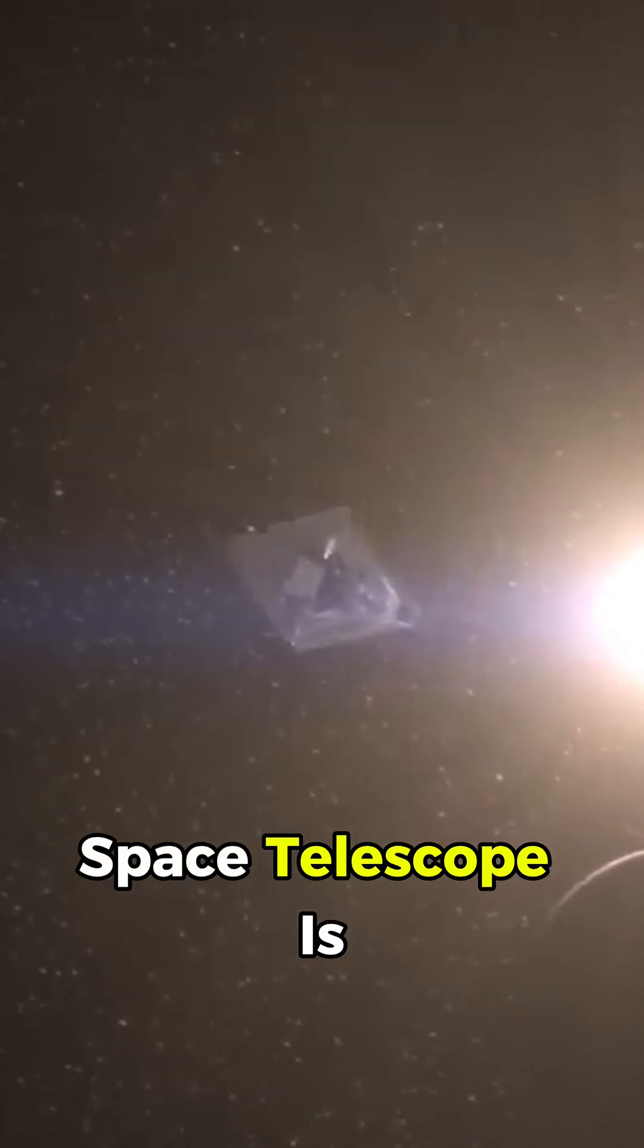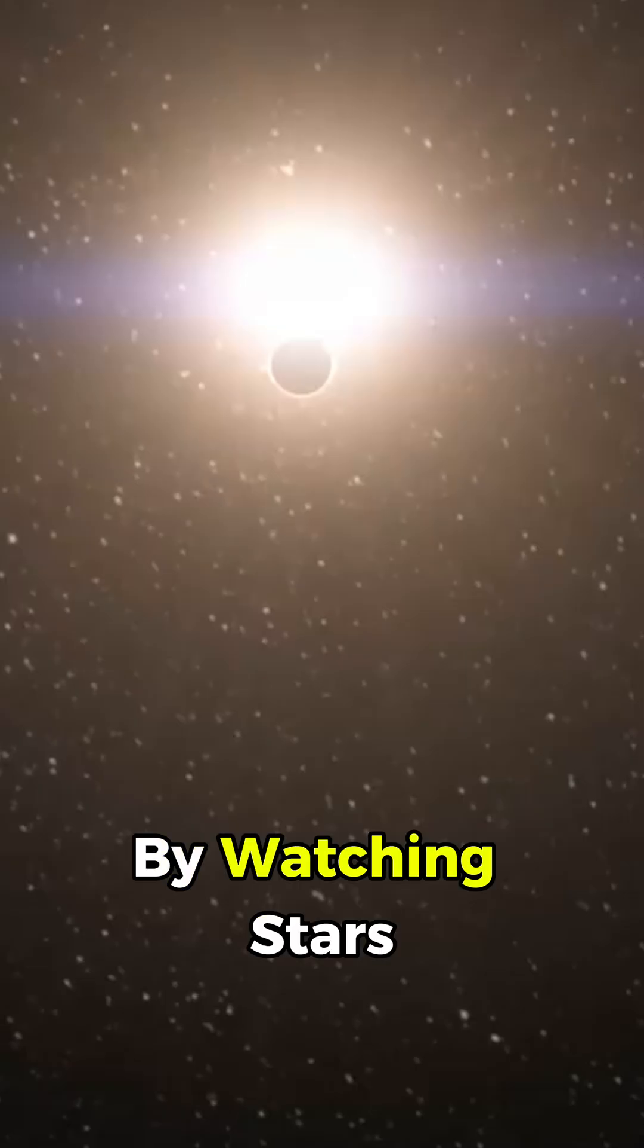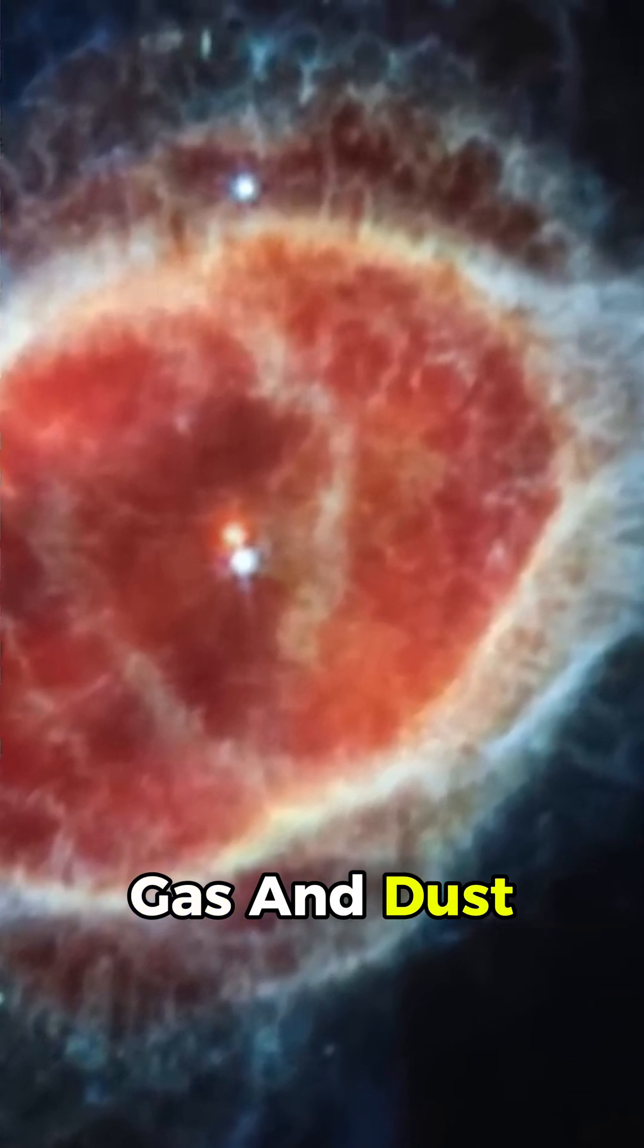The James Webb Space Telescope is taking planet hunting to an entirely new level by watching stars that are still young and surrounded by swirling clouds of gas and dust.